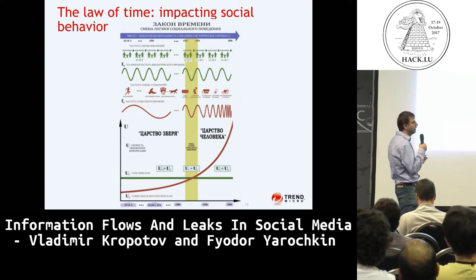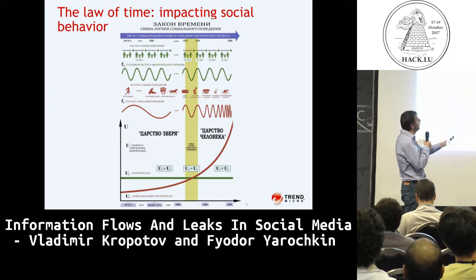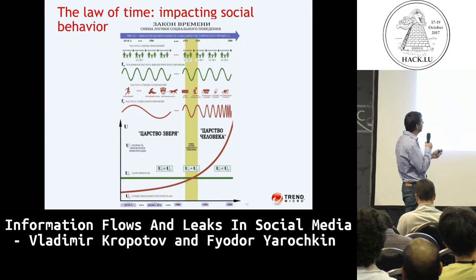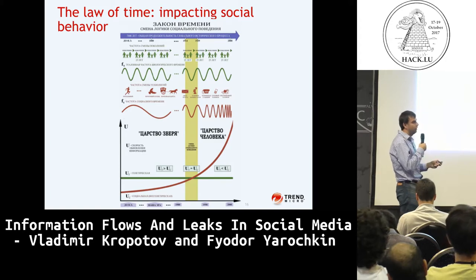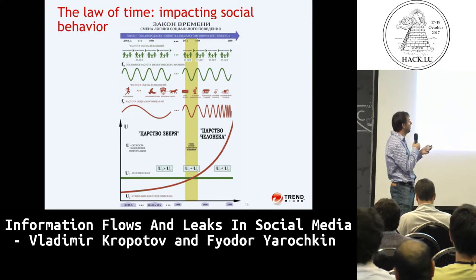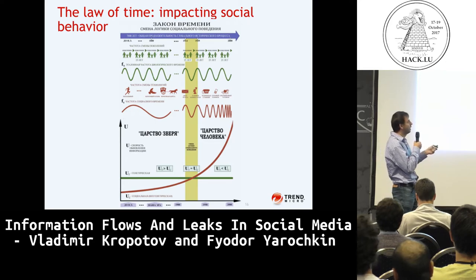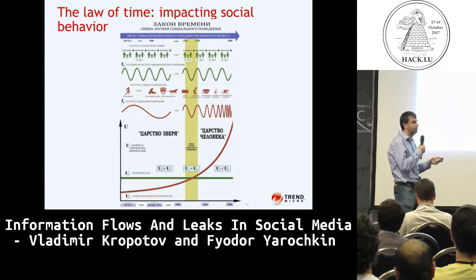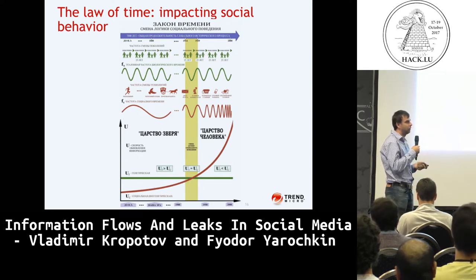Another interesting concept is called the 'time law.' Generation changes happen around every 25 years. Previously, technology changed more slowly than generations, meaning your grandparents and parents could share relevant experience. Now, the speed of technology change is faster than generational change, so nobody can use experience from the previous generation to make decisions. This opens a wide landscape for public opinion manipulation.